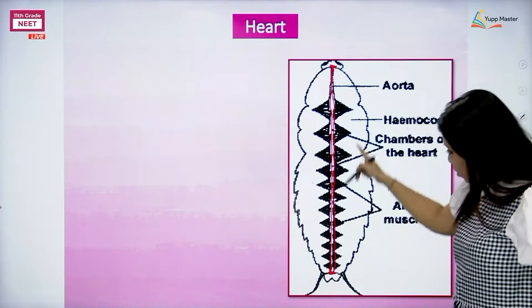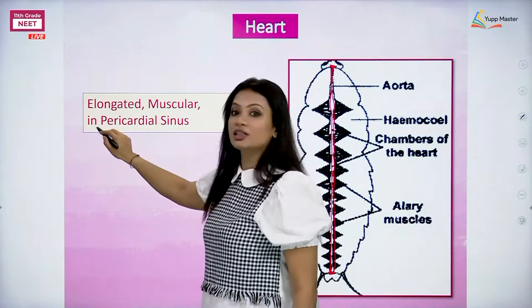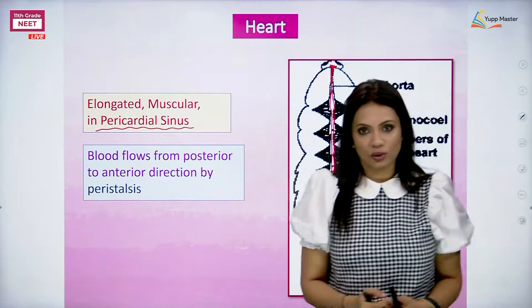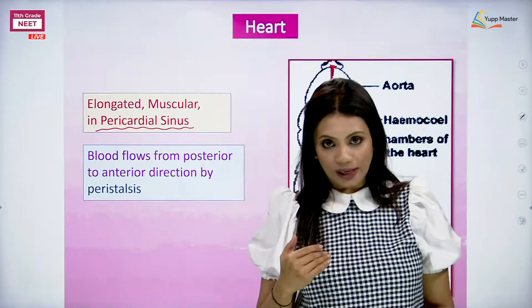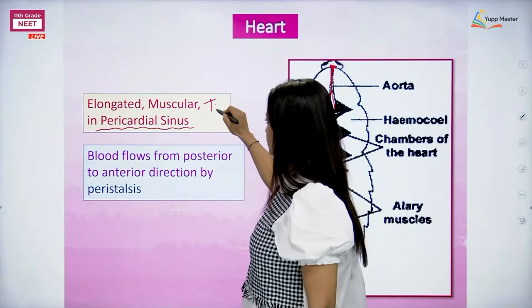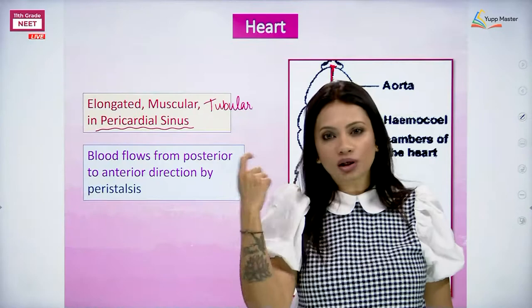The heart of the cockroach is elongated and muscular, and it is placed in the pericardial sinus. When the heart contracts so that blood can circulate, it is always going to be flowing from the posterior-most end till the anterior-most end. Also remember that the heart is a tubular organ. Whenever alternate contractions and relaxations take place in a tubular organ, that is always going to be called peristalsis.